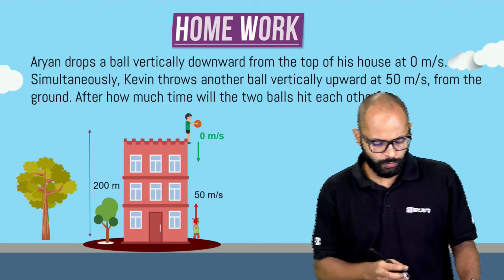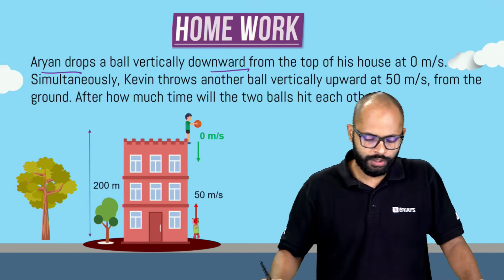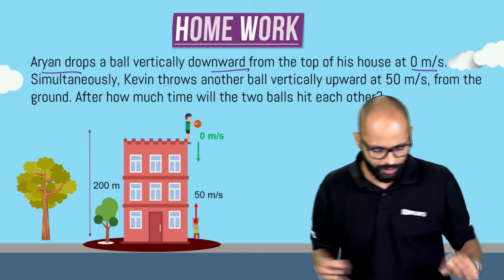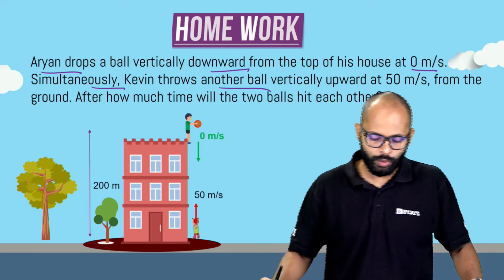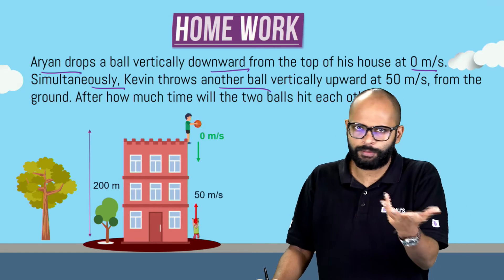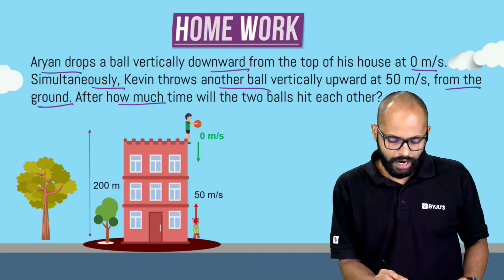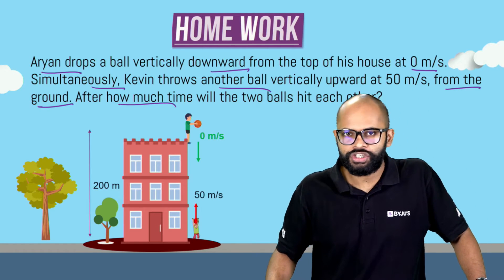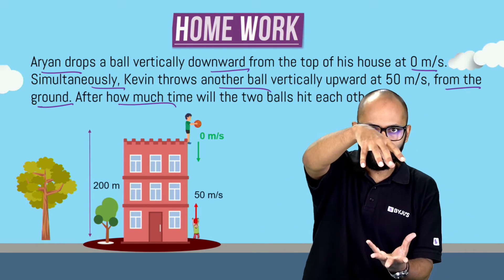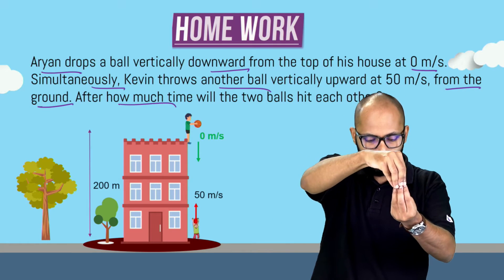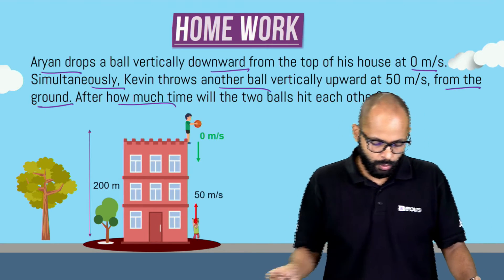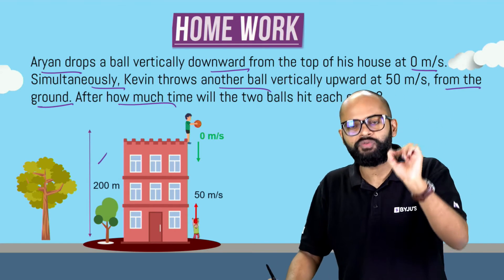So let's see — the question was: Aryan drops a ball vertically downwards from the top of his house at 0 meter per second. If you drop something, obviously the initial velocity is 0. Simultaneously, Kevin throws another ball vertically upward at 50 meter per second — that's the initial velocity. The question is: after how much time will the two balls hit each other or meet?